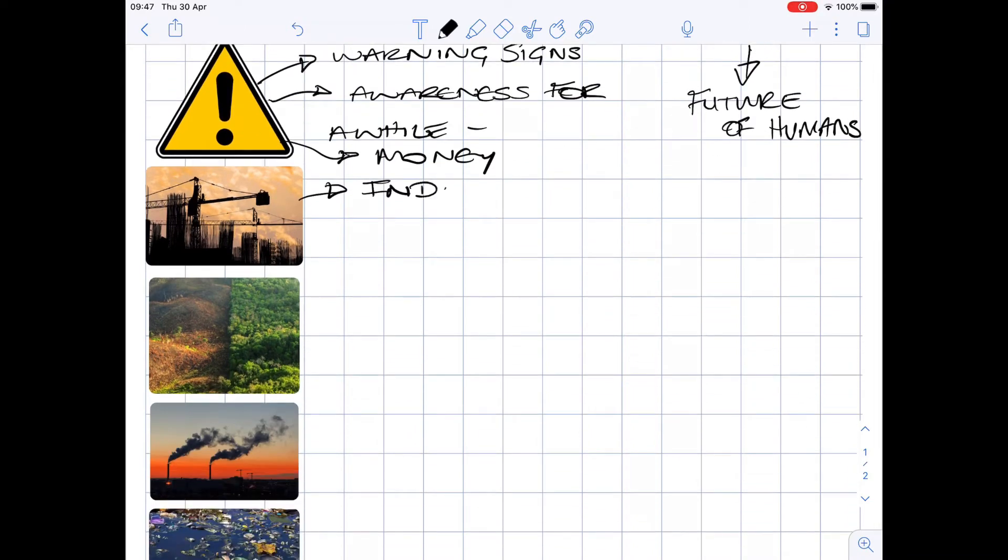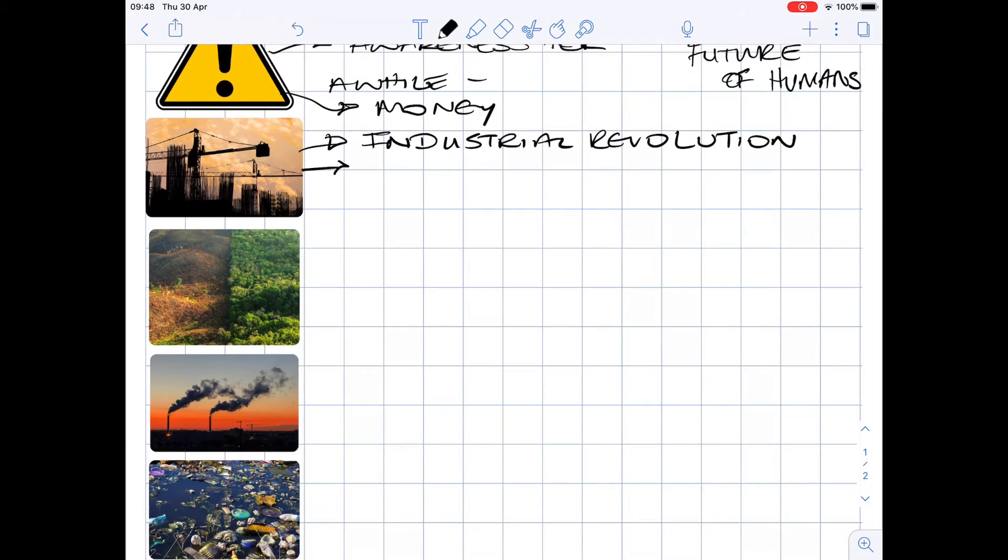For some time, and especially since the Industrial Revolution, humans have conducted many activities that have caused a severe decline in biodiversity on a global scale.